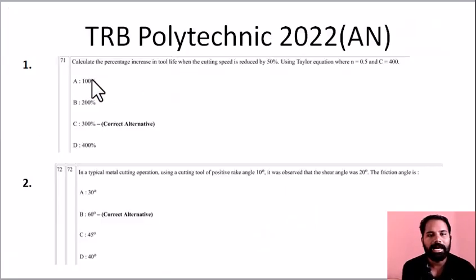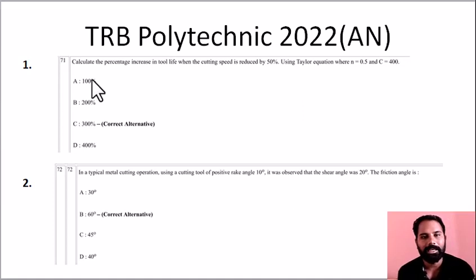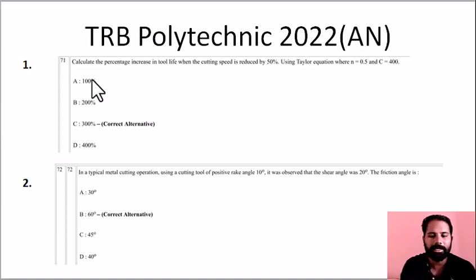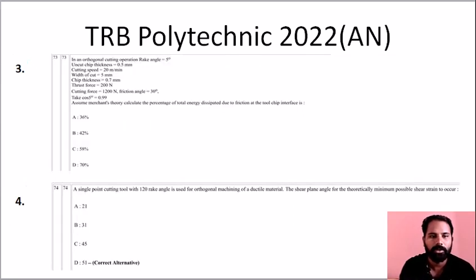This is from the last TRB Polytechnic afternoon batch question paper. There are many questions about metal cuttings — question numbers 71, 72, 73, and 74.